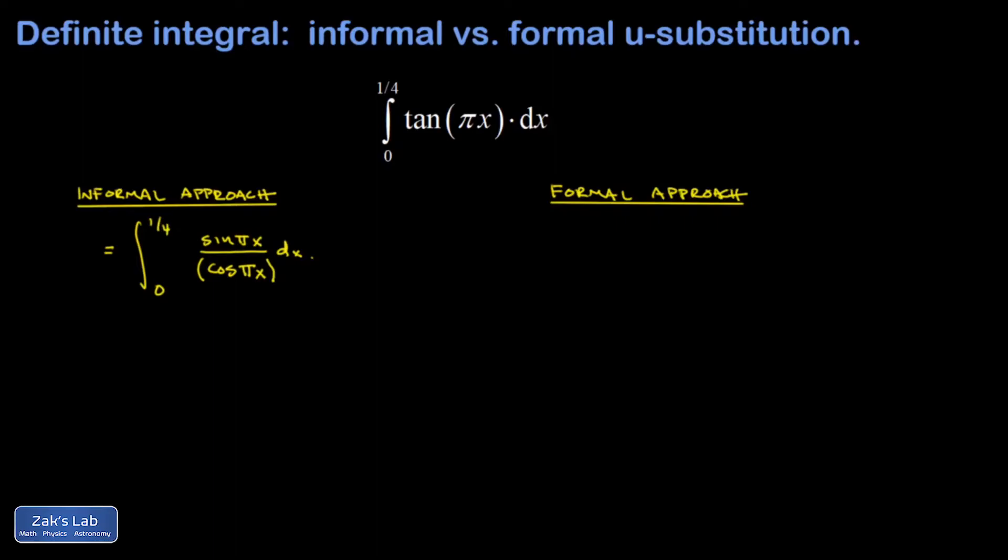There are some adjustments to make, of course, because the derivative of cosine pi x is negative sine pi x multiplied by pi. So I just tacked on a negative pi to that numerator in order to force it to be exactly the derivative of the denominator. I need to put a negative one over pi out in front to compensate.